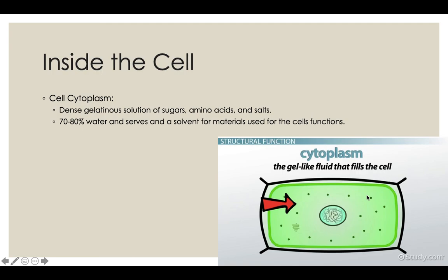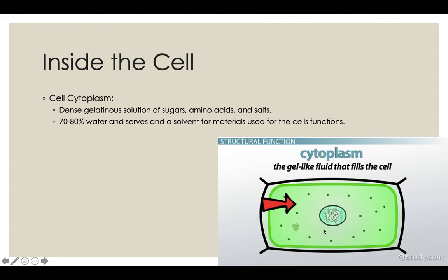Now let's go inside the cell. Every single cell has cytoplasm — essentially 70-80% water with sugars, salts, and DNA dissolved inside. Without cytoplasm, cellular contents wouldn't have space to float and would pool at the bottom of the cell, making it non-functional. Cytoplasm also allows cells to dissolve salts and sugars inside — enzymes work best at certain salt concentrations, and electrical currents require dissolved salts to transmit.